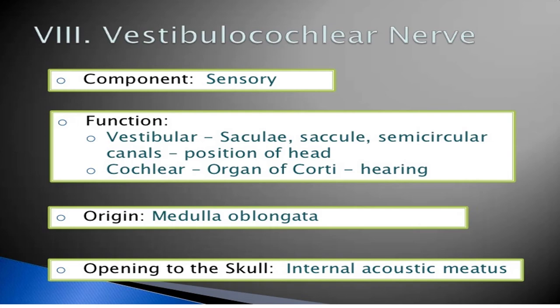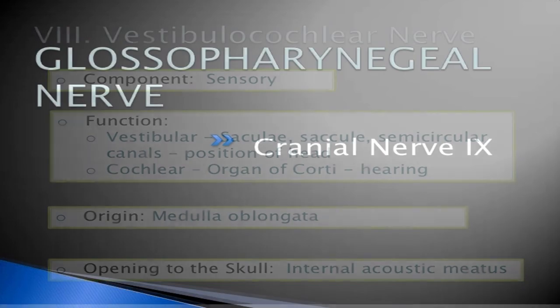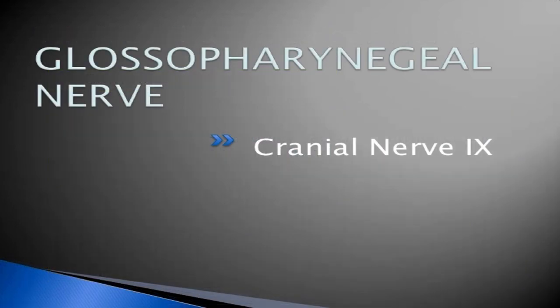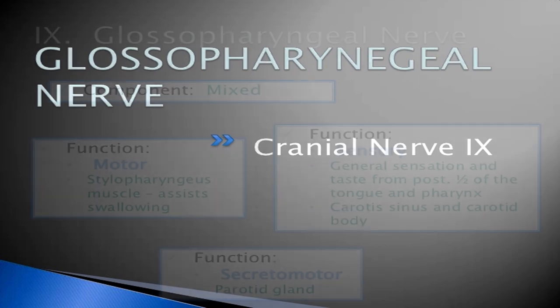The origin of the vestibulocochlear nerve is the medulla oblongata. The opening to the skull is the internal acoustic meatus. The ninth cranial nerve is the glossopharyngeal nerve. Its component is also mixed.